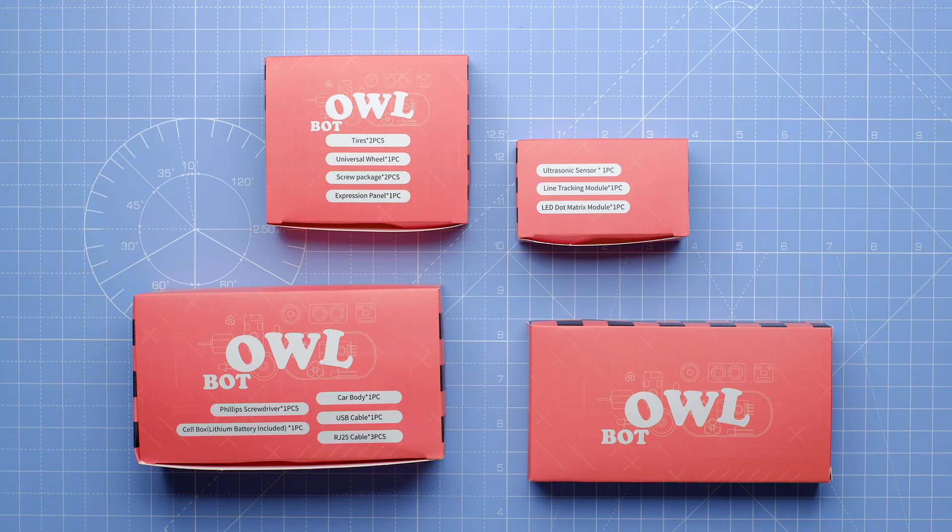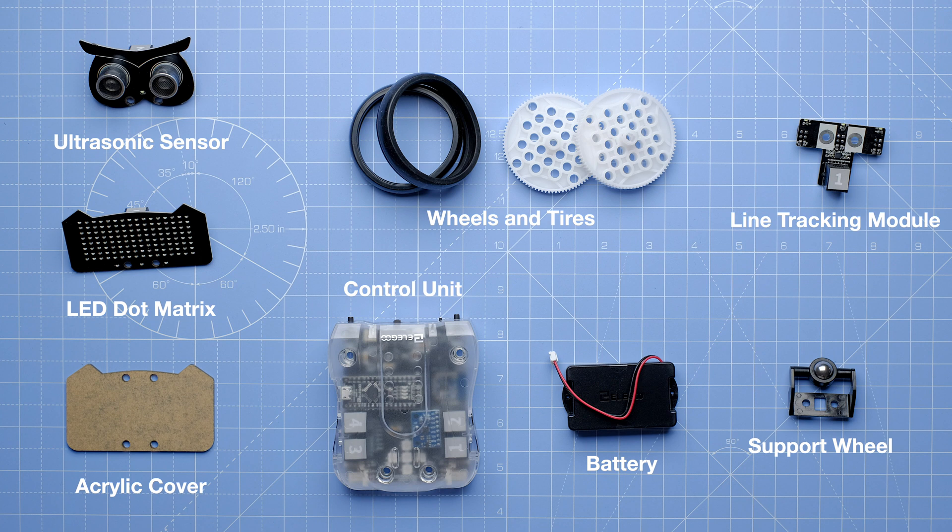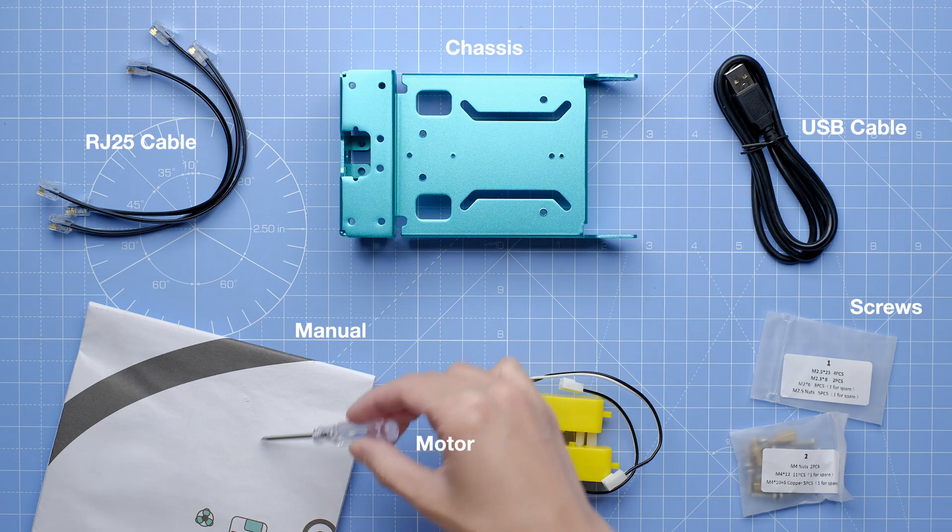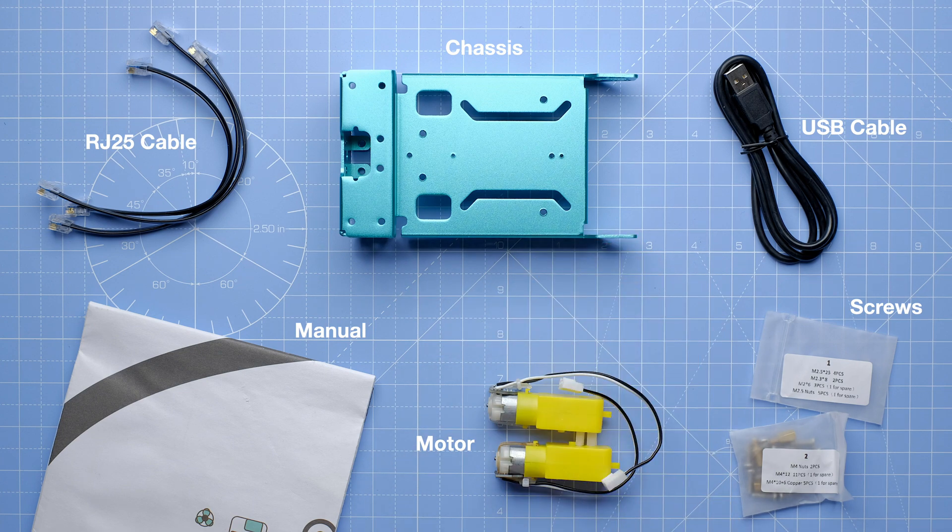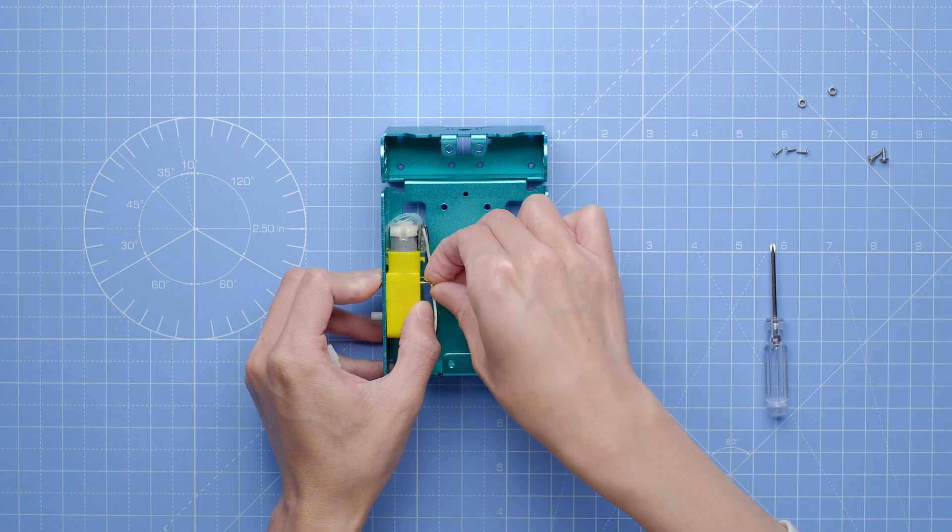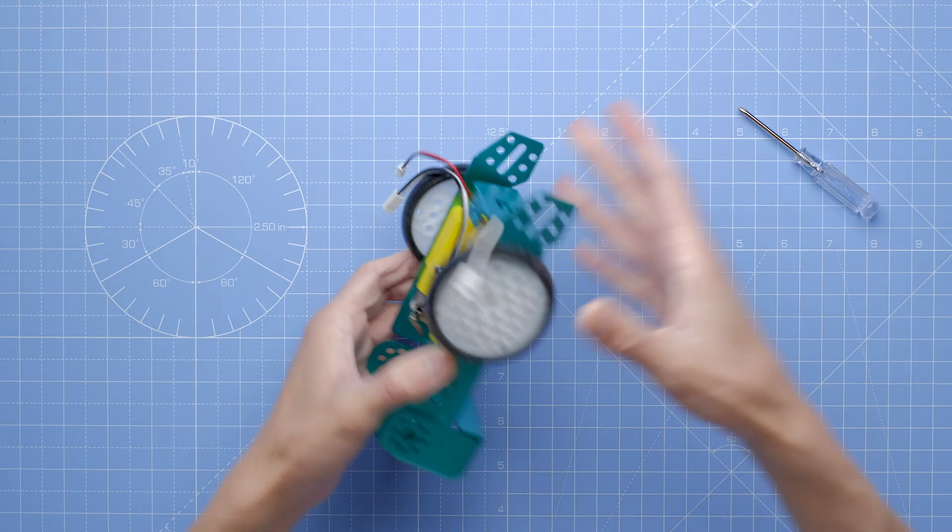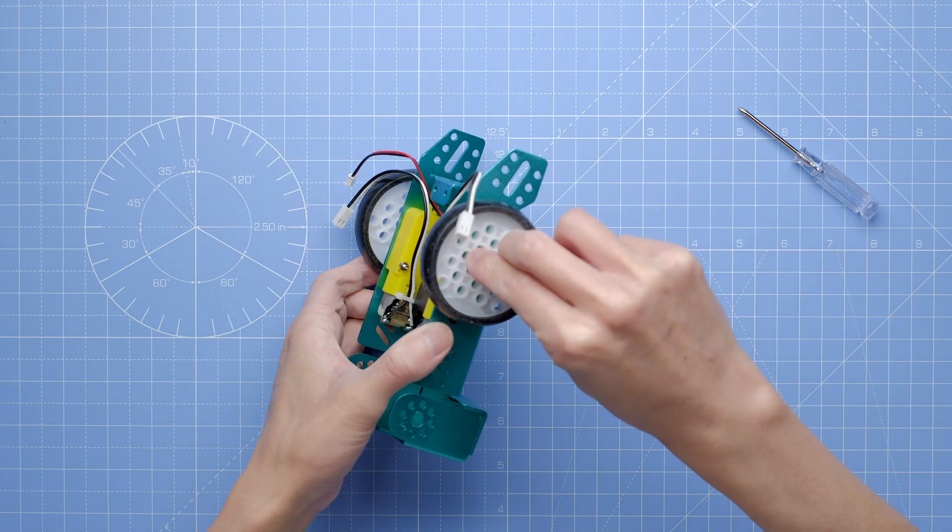First we need to assemble the owl. It comes with everything you need to get started, from all the parts even down to the included screwdriver. Everything is included and I had no trouble building it, which I'm glad since it's aimed for ages around 13. Although I'm like three times over that recommended age, I do want to say however I had a lot of fun building it.